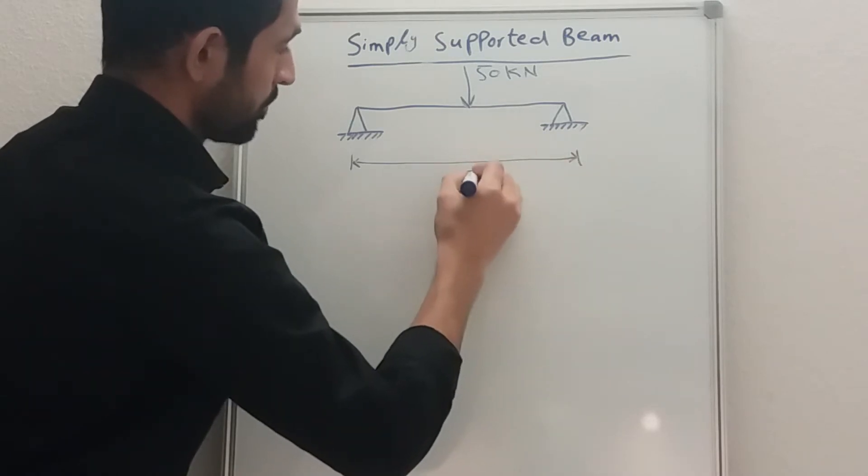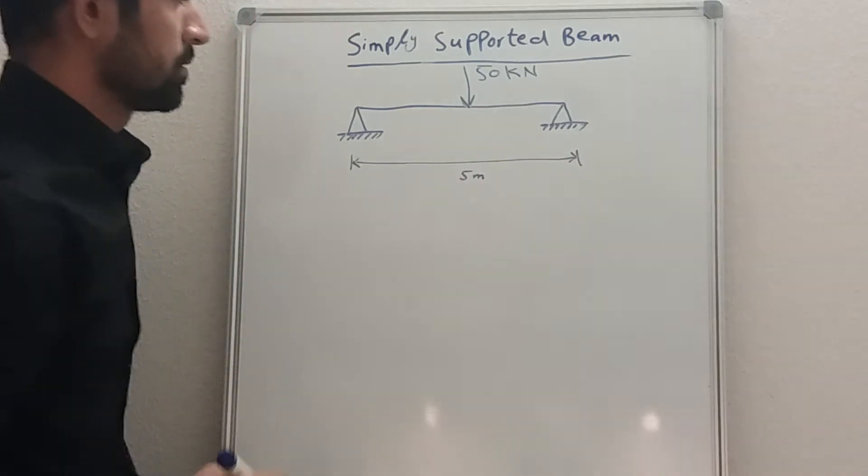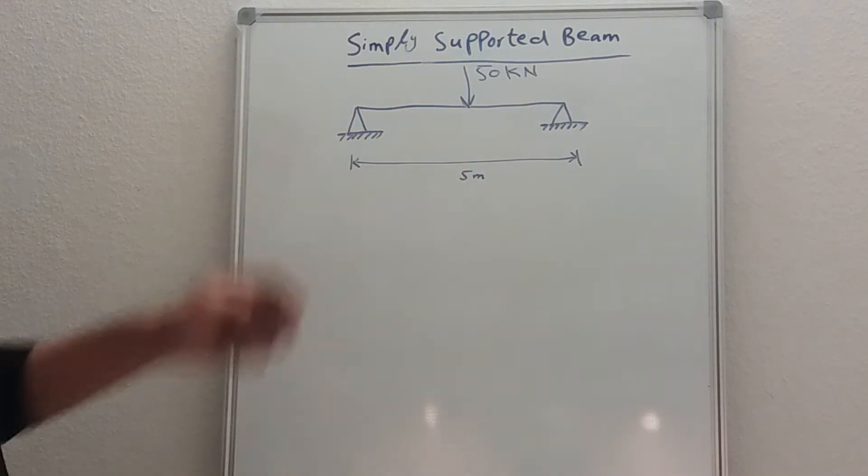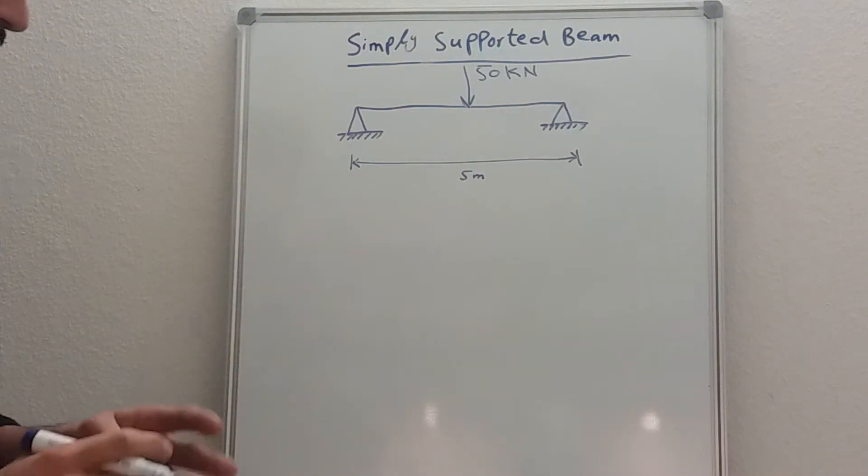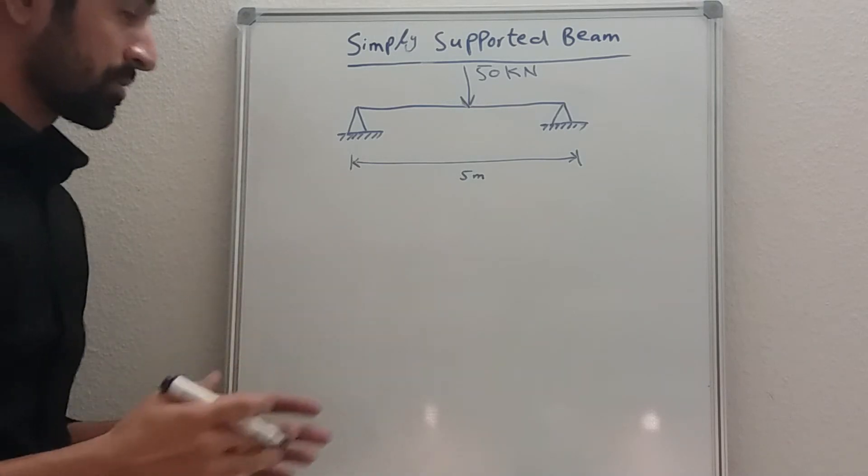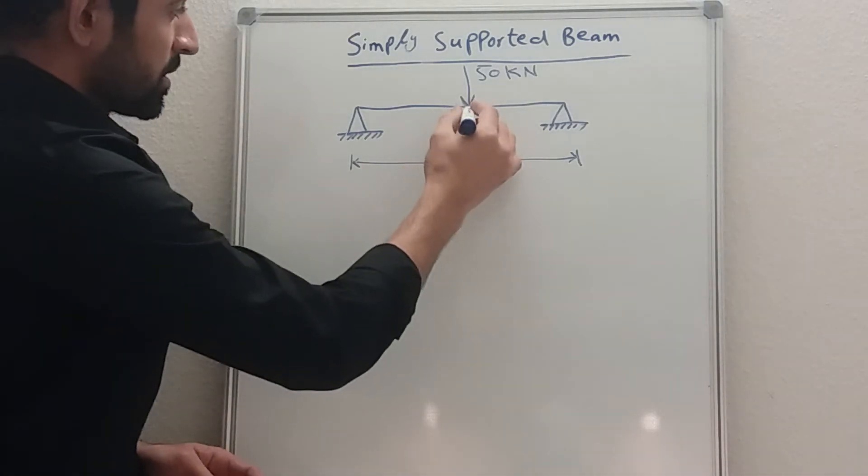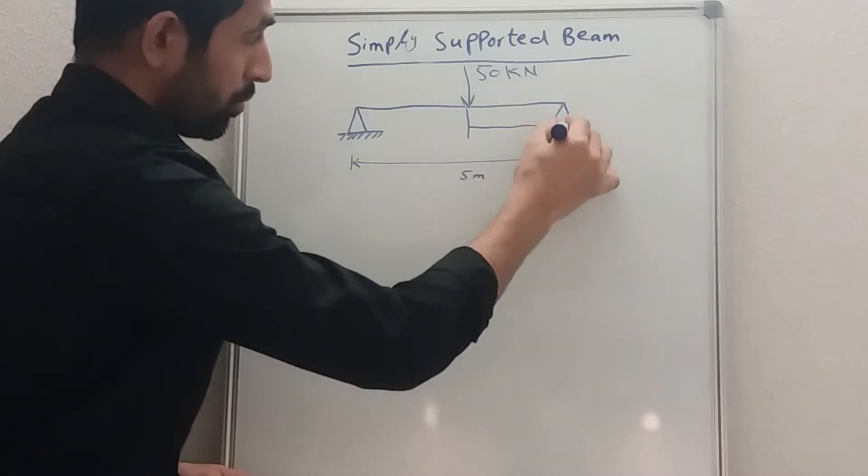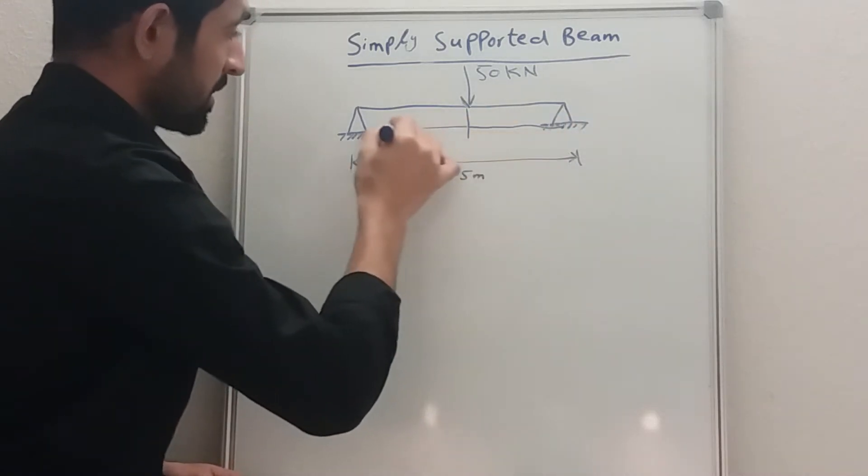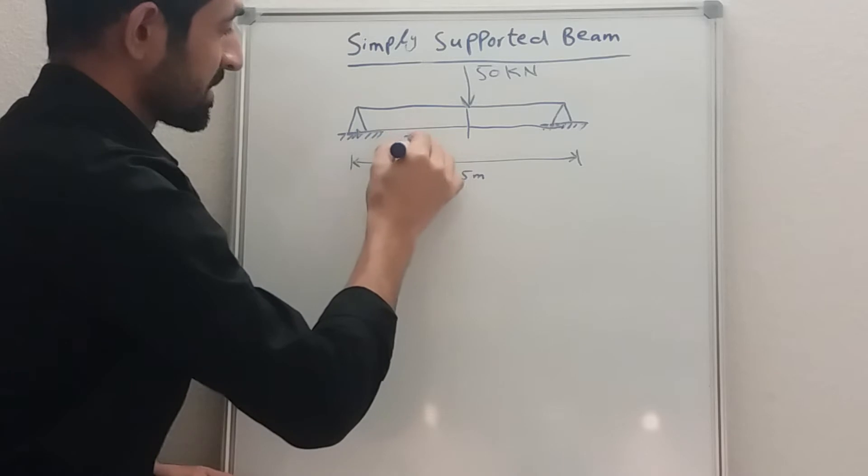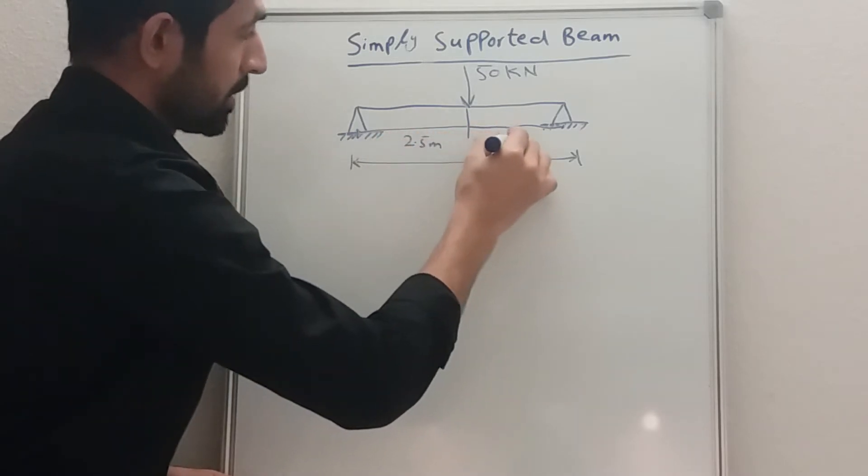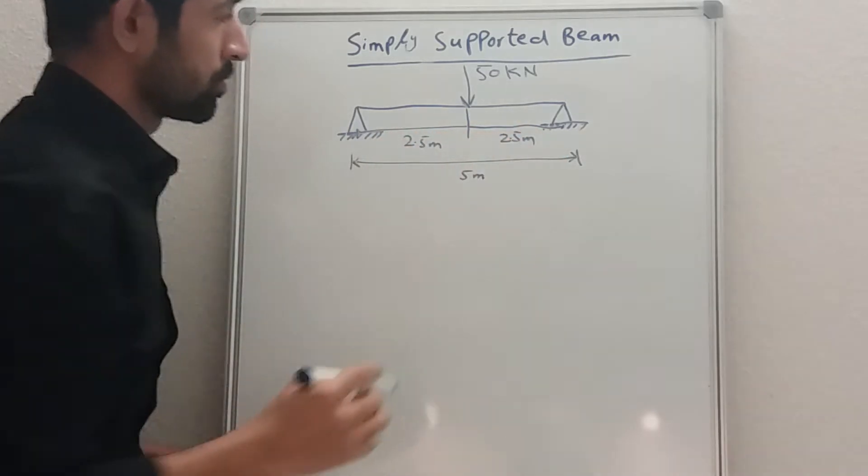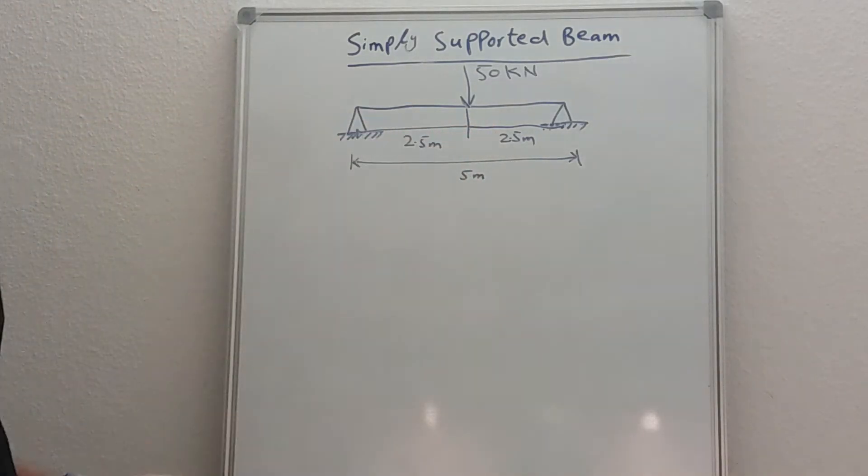As you can see from the diagram, this beam is a symmetrical beam. What is a symmetrical beam? A symmetrical beam is if the load acts in the middle, both sides of the beam, the right and left, has the same distance which is 2.5 meter and 2.5 meter. So this type of beam or this type of diagram is called simply supported symmetrical beam.